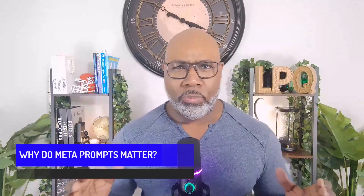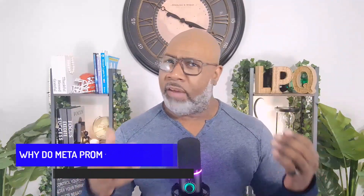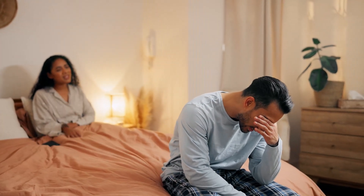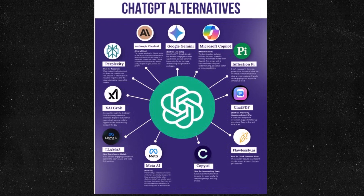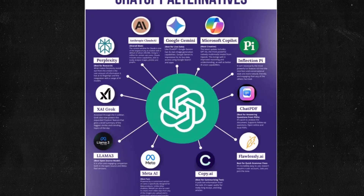Why do Meta-Prompts matter? Have you ever had an argument with your significant other, and she — or for some of you, he — comes at you and says, 'you should know this,' and you clap back with 'how should I know? I ain't no mind reader.' The same applies to AI models. AI models like ChatGPT, Claude, CoPilot, Perplexity, and Gemini aren't mind readers. Their response depends entirely on how clearly you define the task.